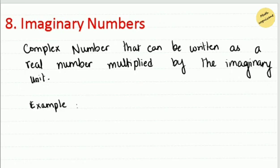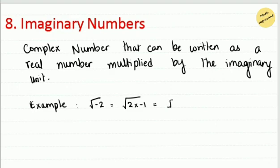For example, √(-2): since square roots of negative numbers are not defined in real numbers, we rearrange it as √(2 × -1). Here √2 is a real (irrational) number, and √(-1) = i. So √(-2) = i√2, which is an imaginary number.